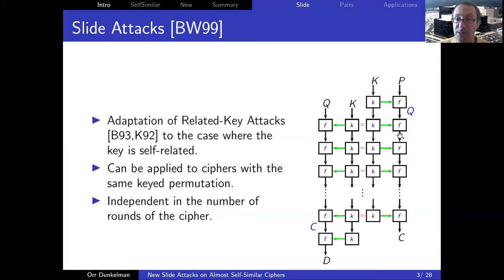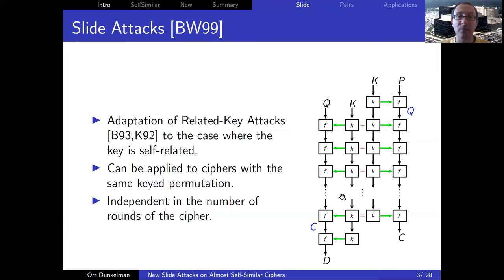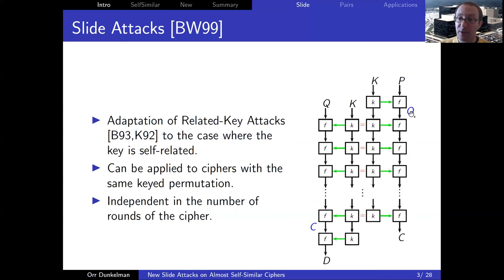Because if the value Q here is equal to the value Q here, and this is exactly the same function, then these two values are going to be the same. This continues all the way through until the ciphertext C. Note that this is independent of the number of rounds — having more rounds doesn't change this property — meaning that slide attacks usually can break any number of rounds. A slide pair is a pair where P becomes Q after one round.